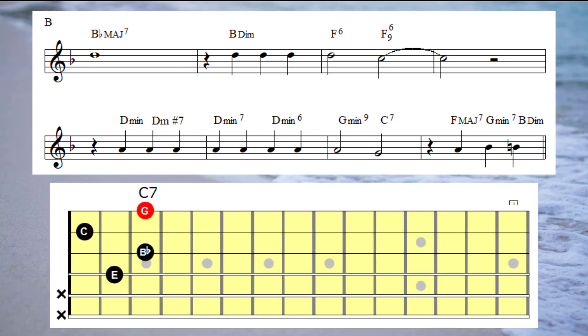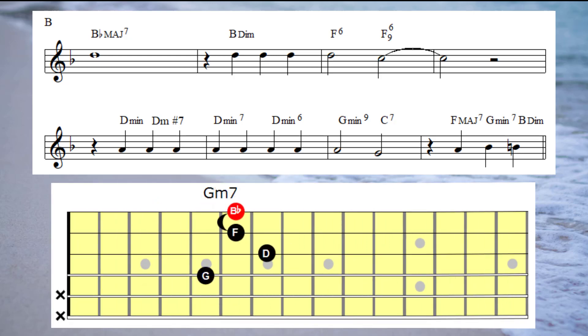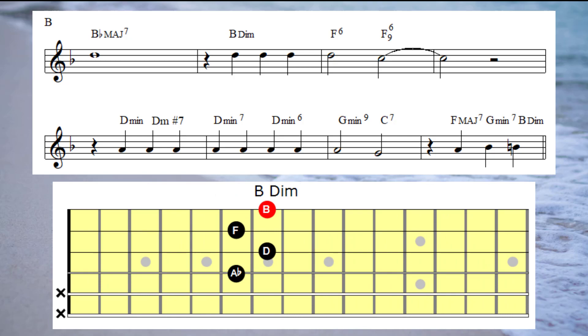And now on to bar eight, which is essentially like a pickup bar sending us into the A3 section of the song. In this bar I'm going to play an F major seventh under the A note, a G minor seventh under the B flat, and a B diminished chord under the B.